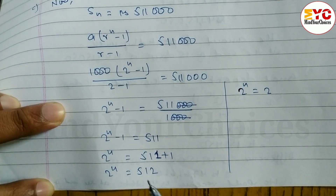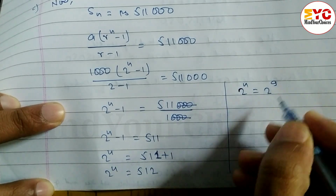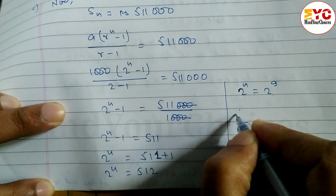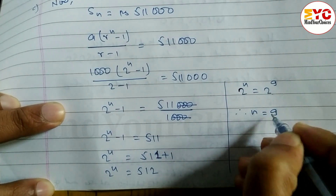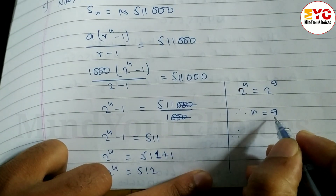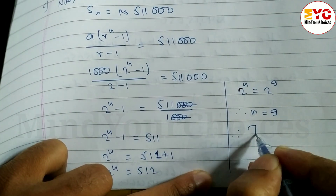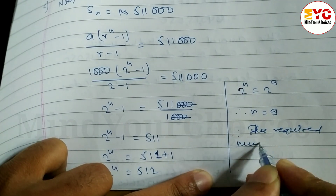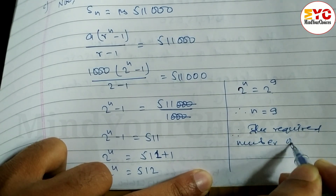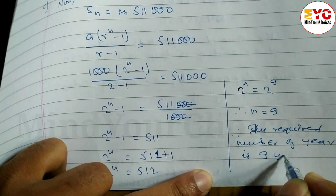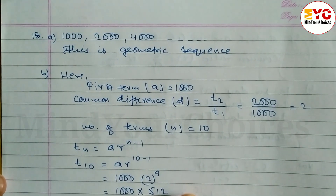Since 512 equals 2 to the power 9, the bases are the same so the powers are equal. Therefore n is equal to 9. So to deposit a total of 511,000, 9 years are required. The required number of years is 9 years.